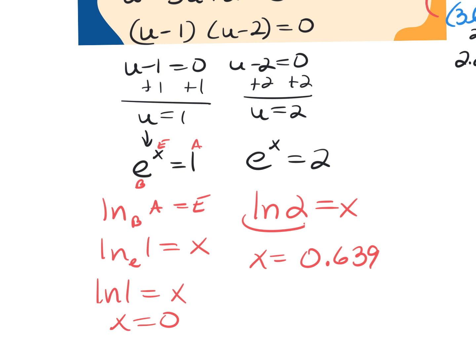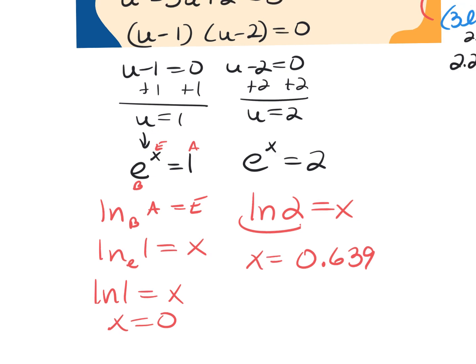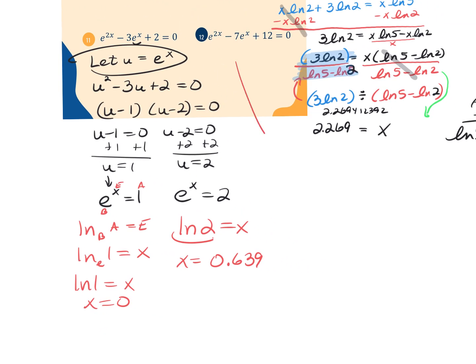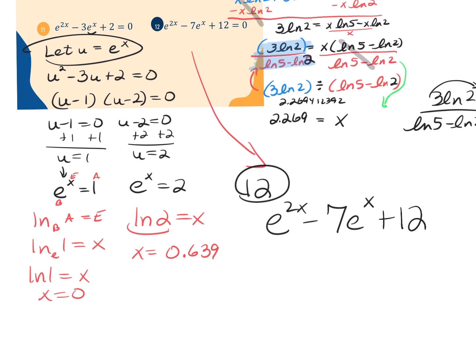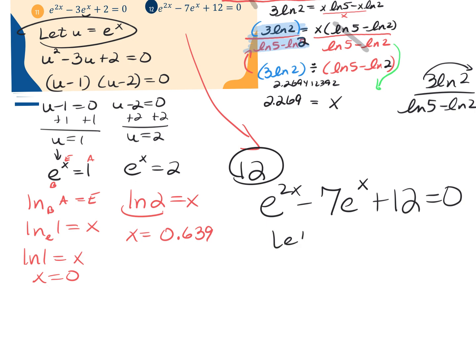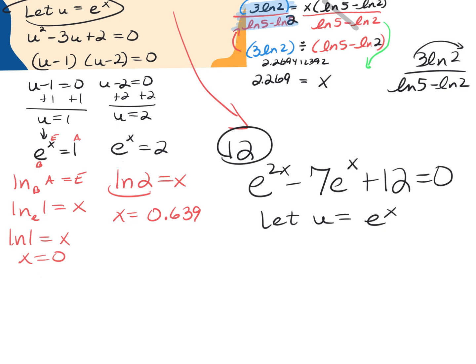Technically we could also use log here, but you'd have to do the change of base. It's easier to use LN when the base is E. For number 12, the problem is E to the 2X minus 7E to the X plus 12 equals 0. Again I'll let U equal E to the X and replace the E to the X terms with U. So U squared minus 7U plus 12 equals 0.